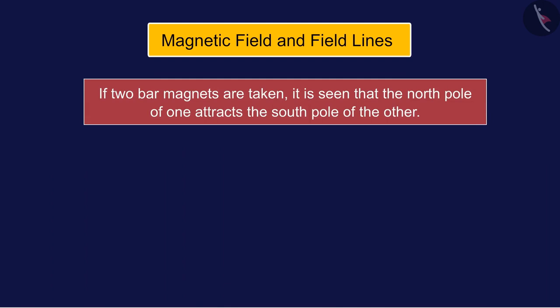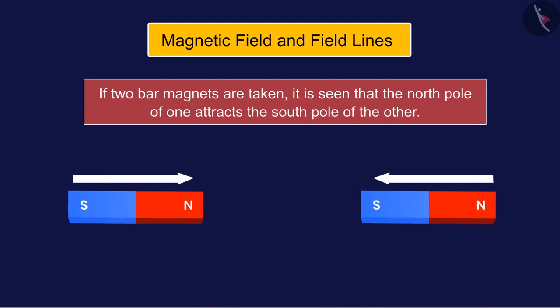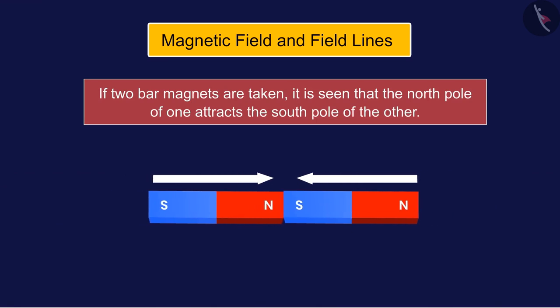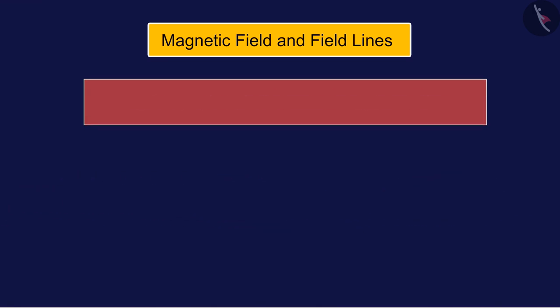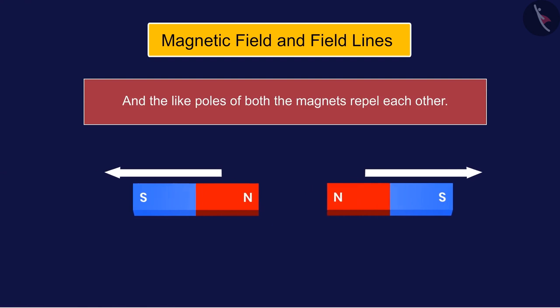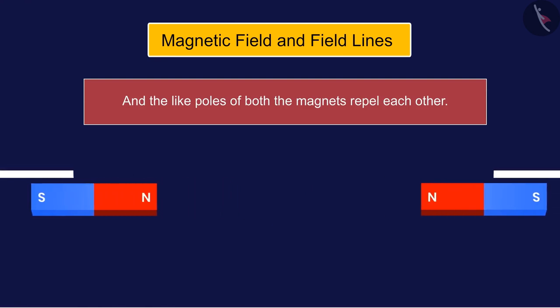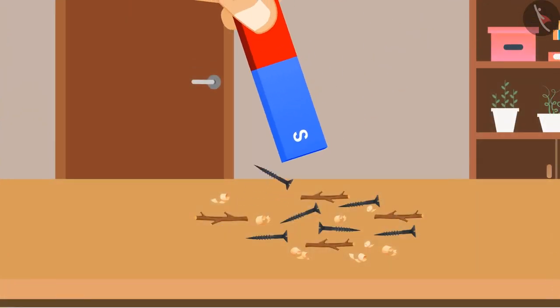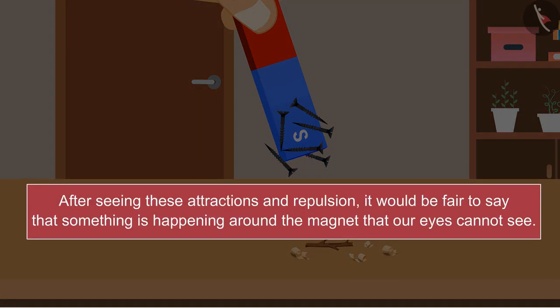Magnetic field and field lines: If two bar magnets are taken, it is seen that the north pole of one attracts the south pole of the other, and the like poles of both magnets repel each other. We know that magnets attract iron but not wood. After seeing these attractions and repulsions, it would be fair to say that something is happening around the magnet that our eyes cannot see.